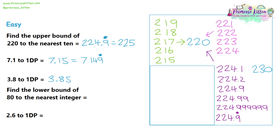Now we're going to have a look at lower bounds — that is the smallest number that would round up to the number given — starting with 80. We want numbers smaller than 80 that round up to 80. When we rounded 220 to the nearest 10, we looked at units. But for rounding to the nearest integer, we look at the next place value underneath, which is tenths. So 79.9 would round up to 80. Something like 78 is not going to round up to 80 to the nearest integer — 78 itself is already an integer — so we look at decimal places instead.